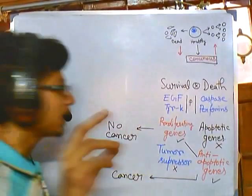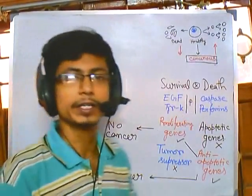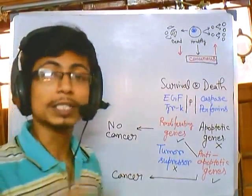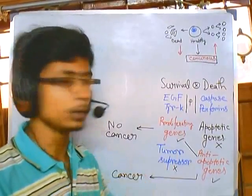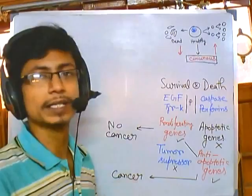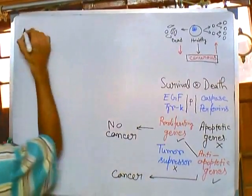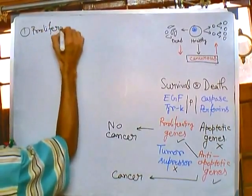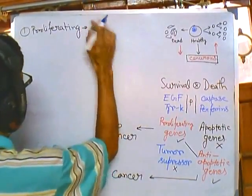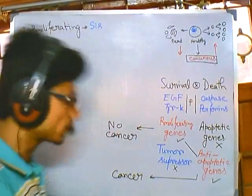Now let us look at real-life examples. For proliferating genes, we have phosphorylating genes, growth factors, and growth-regulating genes. Examples include tyrosine kinase and serine kinase genes. For the epidermal growth factor and platelet-derived growth factor (PDGF), the gene is called sis (or c-sis). These red things represent proteins and the blue things represent genes.